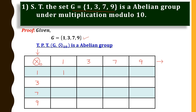Now we have to fill up these boxes. 1×1=1, 1×3=3, 1×7=7, 1×9=9. Similarly, 3×1=3, 3×3=9, 3×7=21 — if you get more than 10, divide by 10 and write the remainder, so 21 divided by 10 gives remainder 1. And 3×9=27, remainder is 7.